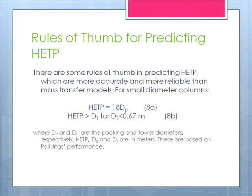There are some rules of thumb in predicting HETP which are more accurate and more reliable than mass transfer models. For small diameter columns, the following correlations are available.